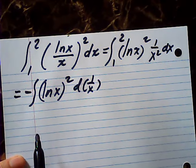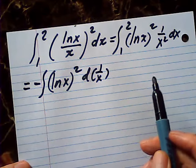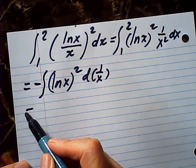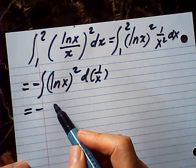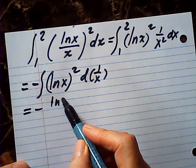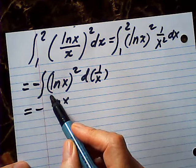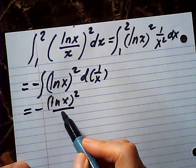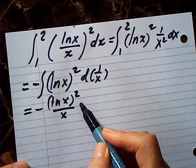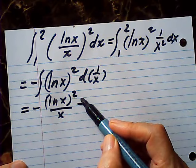Then we can use by parts. By parts, this is u, this is v, right? This is u dv, this is u, this is v, minus becomes plus.